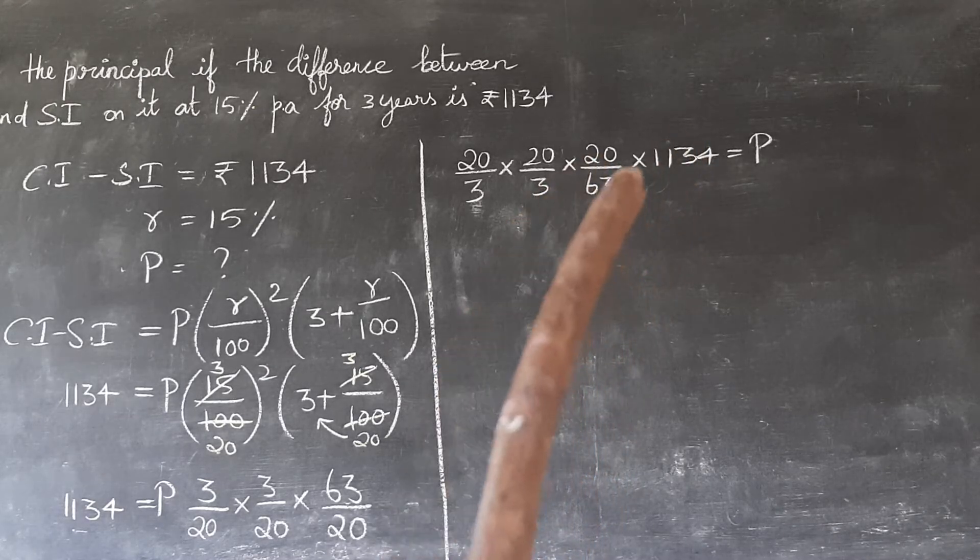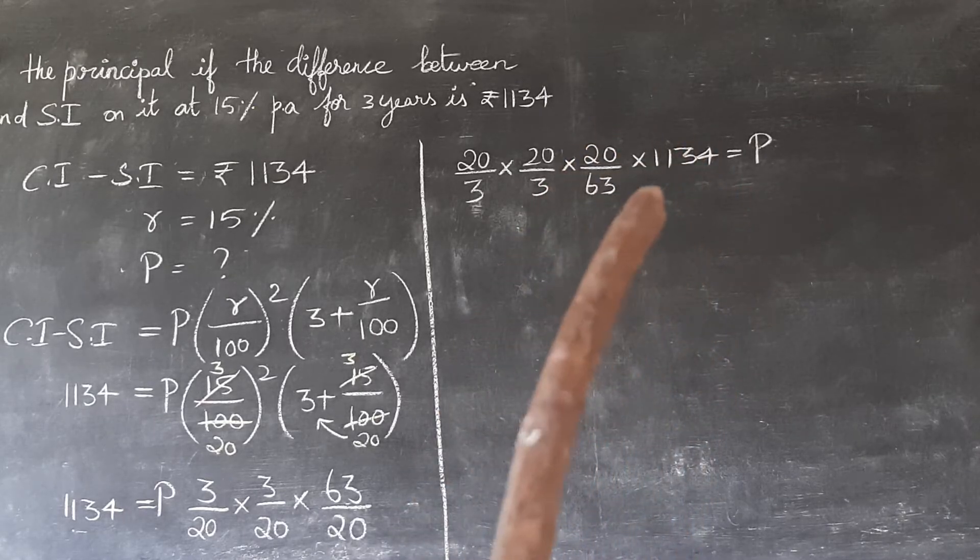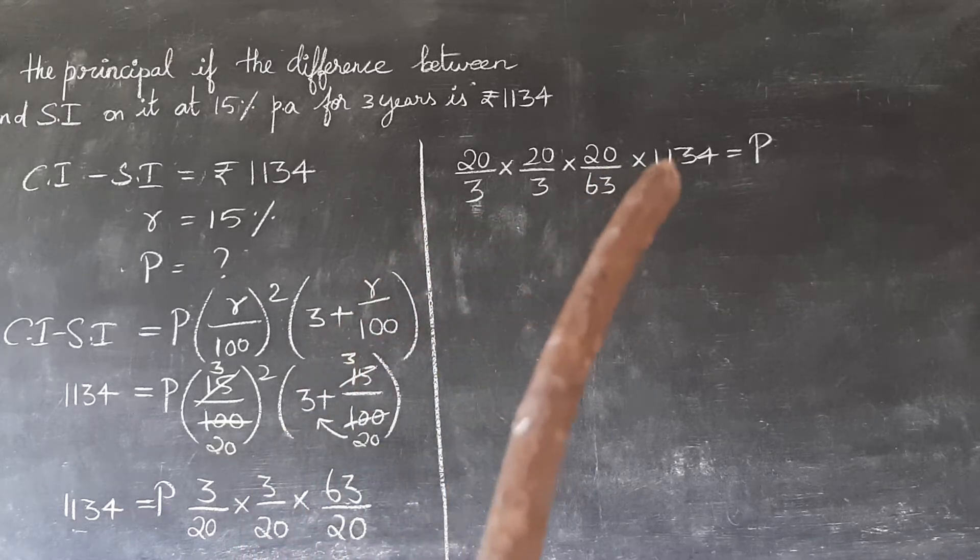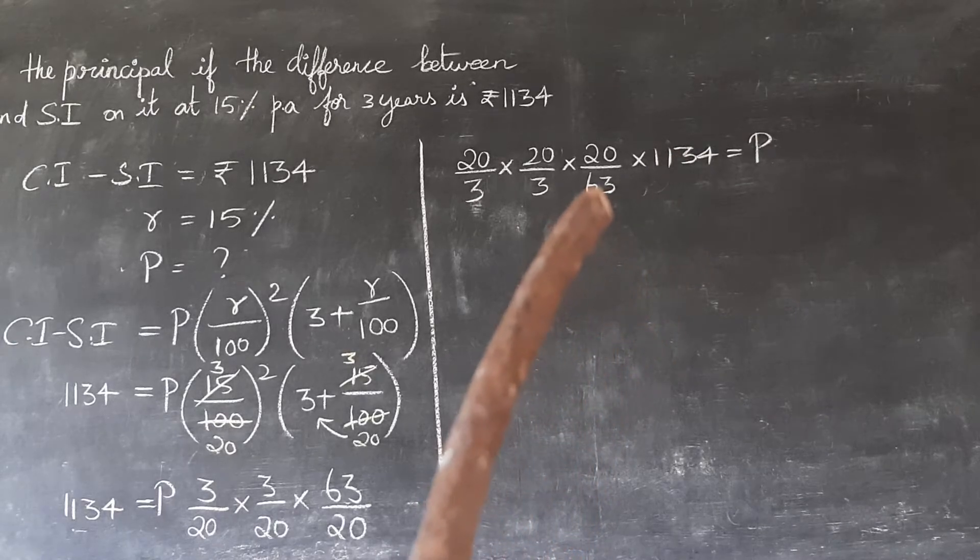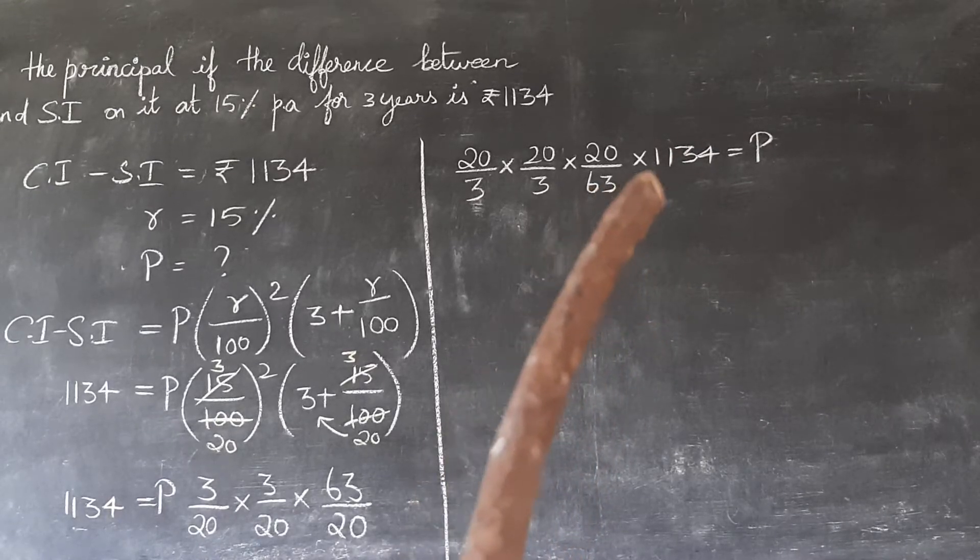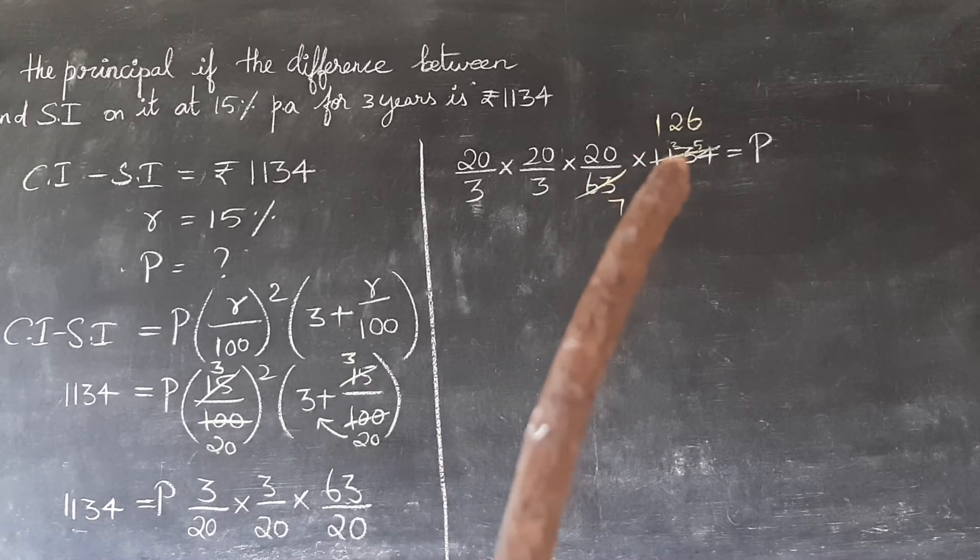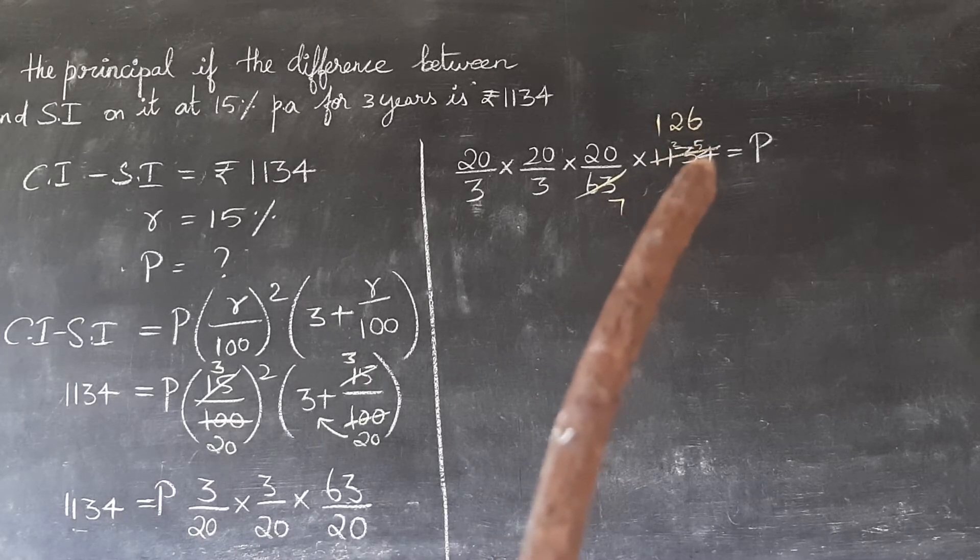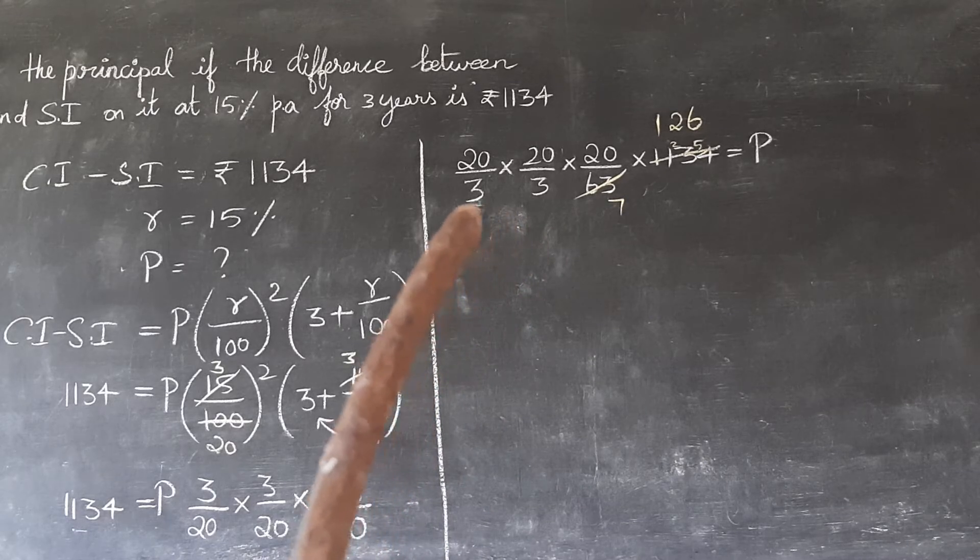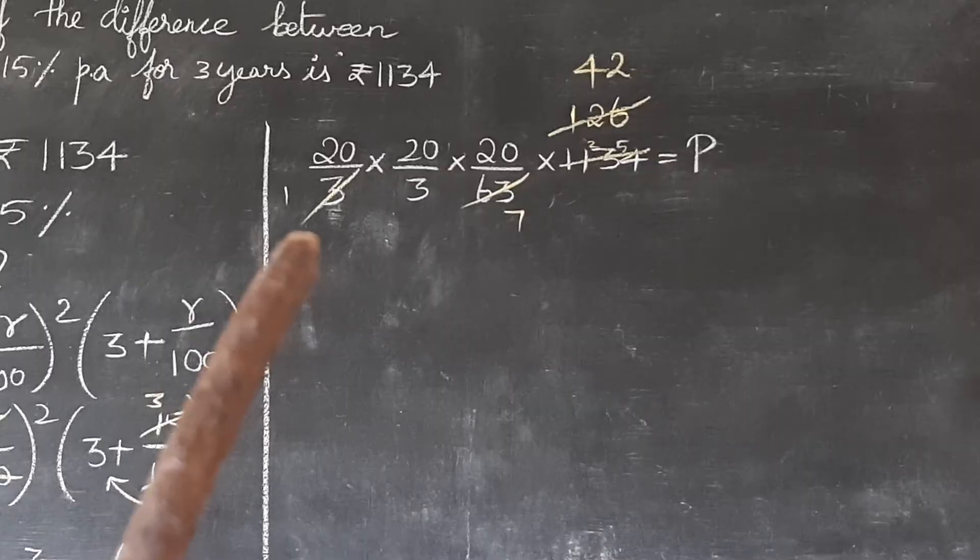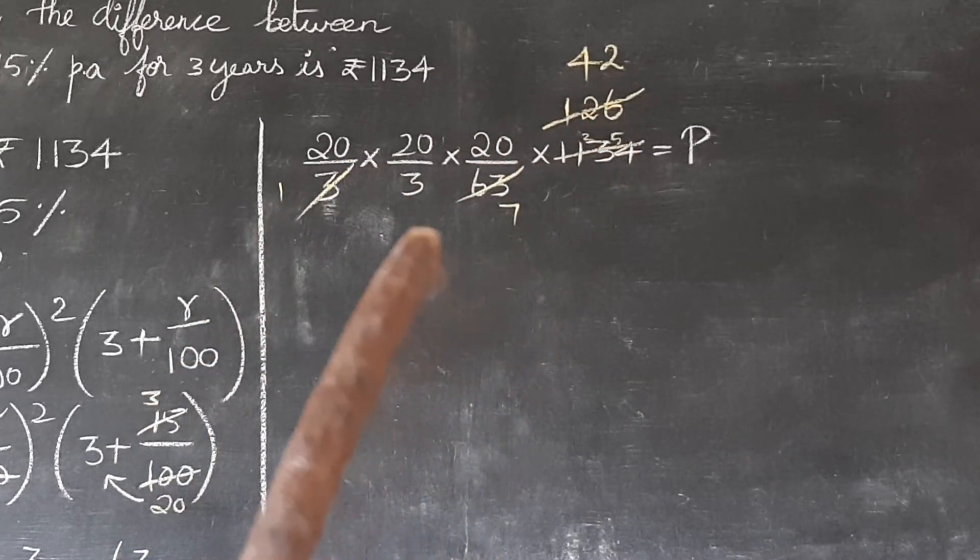If we use 9 table: 9 sevens are 63, 9 sevens are 63, 9 ones are 9 carry over 2, 9 twos are 18 carry over 5, 9 sixes are 54. So now we get 126. Now we have 3 remaining, so cancel by 3 table: 3 ones are 3, 3 fours are 12, 3 twos are 6. Again we have denominator 3.